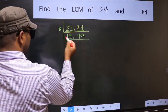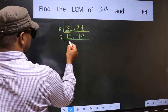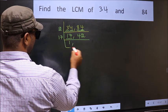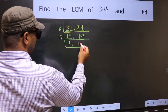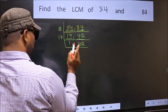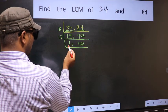Now here we have 17. 17 is a prime number so 17×1=17. The other number 42, not divisible by 17 so we write it down as it is.